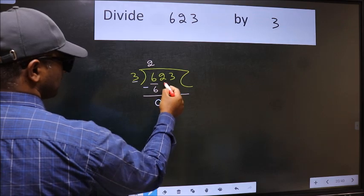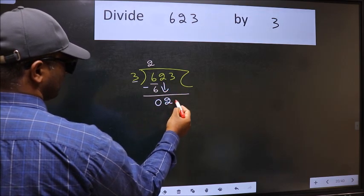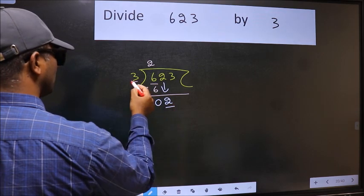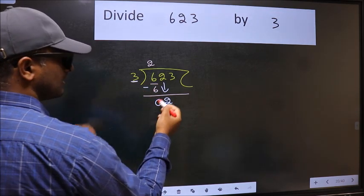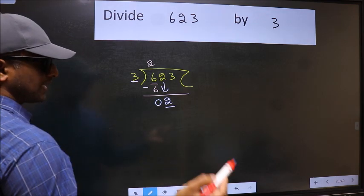After this, bring down the next number. So 2 comes down. Now here we have 2 and here 3. 2 is smaller than 3, so we should bring down the second number.